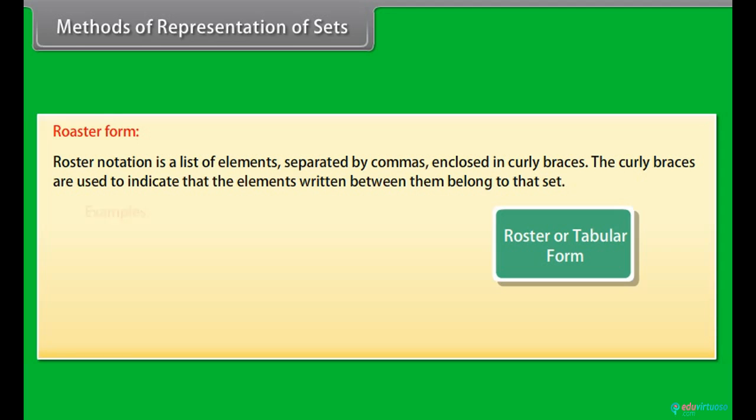Let's look at some examples of sets listed with roster notation. R is equal to A, E, I, O, U.